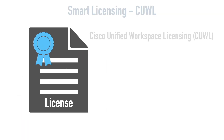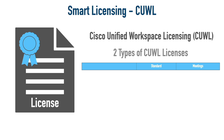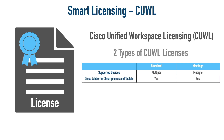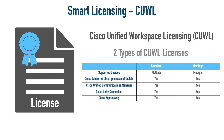Now let's contrast CUCL with Cisco Unified Workspace Licensing, or CUWL — many people pronounce it 'cool' licensing. This is still per-user licensing, but it covers a bundle of applications. It has two types: Standard and Meetings. A single user can be associated with multiple phones, Cisco Jabber is supported, and Cisco Unity Connection and Expressway are included without add-ons. Cisco WebEx conferencing is an add-on for Standard, but is included with the Meetings option.